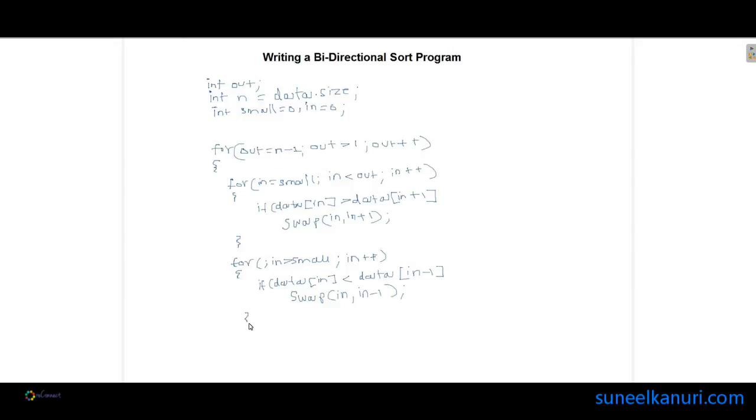Now obviously after this second for loop, the smallest element will be at position small, and there is no need to look for either the smallest element or the largest element at that position. So we exclude that from future searches for smaller or larger elements by incrementing it by one, so we're going to do small plus plus.